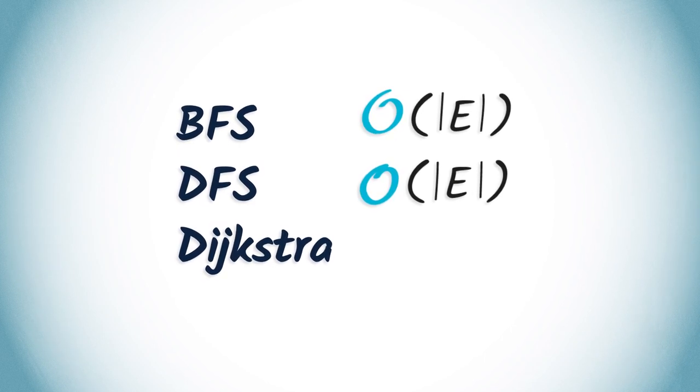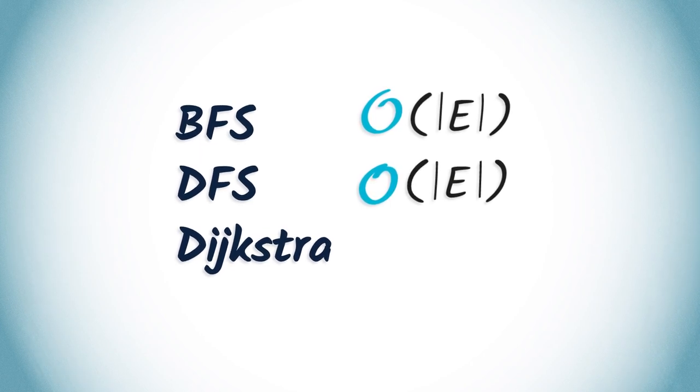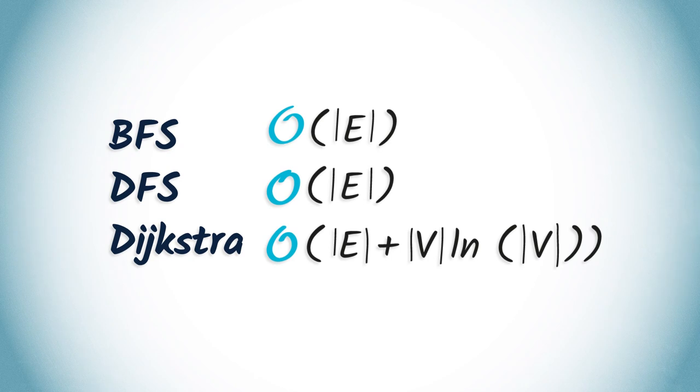Regarding Dijkstra's algorithm, the complexity will largely depend on the implementation of the min heap. In practice, it's possible to obtain a complexity of Big O of |E| + |V| log |V|. However, we won't demonstrate this result here. This ends today's lesson on the complexity of algorithms.